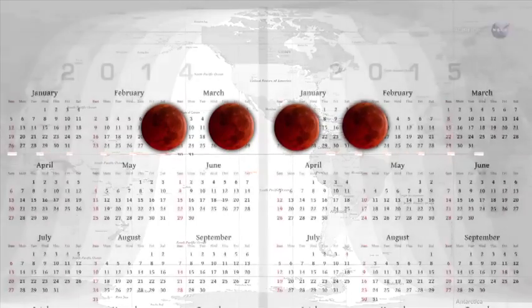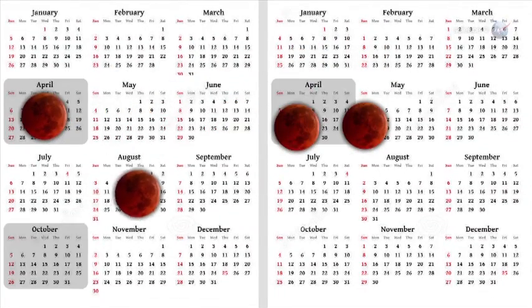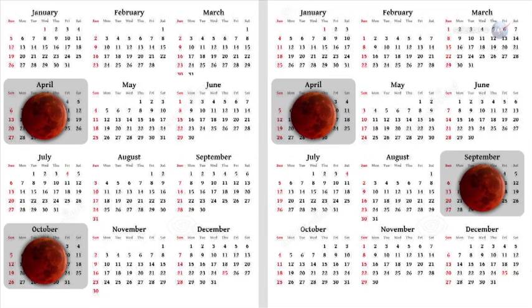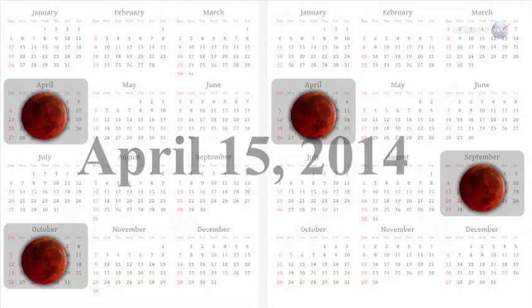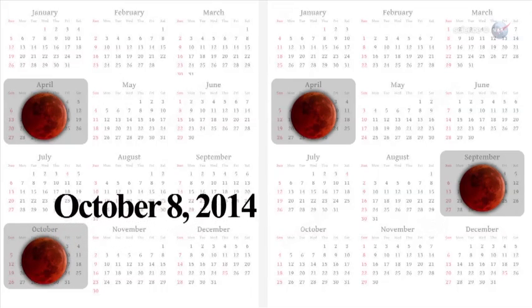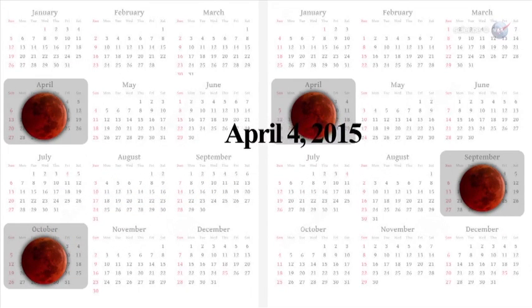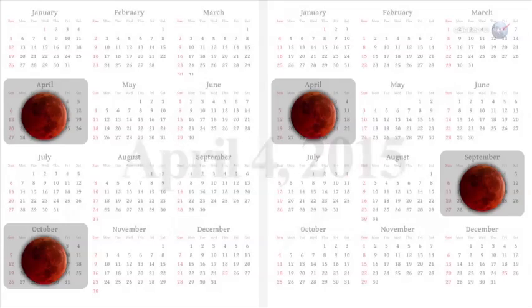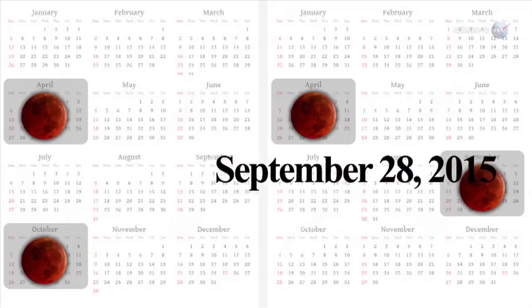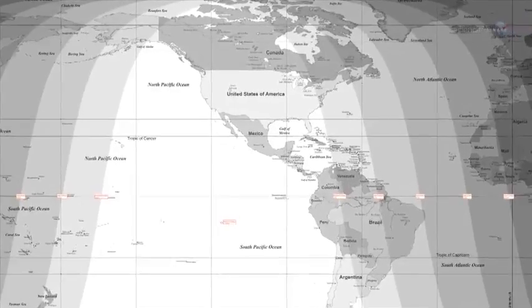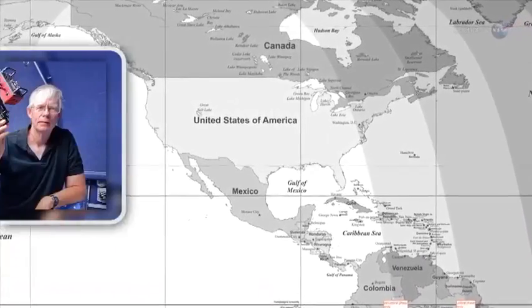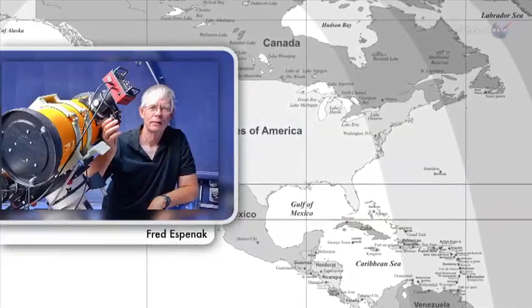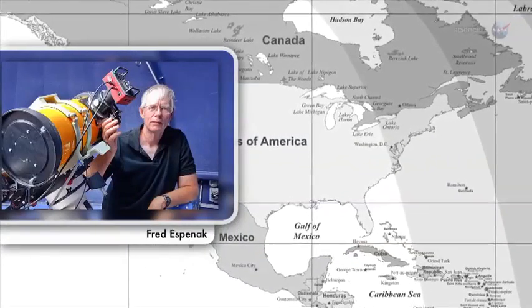A series of four consecutive total eclipses occurring at six-month intervals. The total eclipse of April 15, 2014, will be followed by another on October 8, 2014, and another on April 4, 2015, and another on September 28, 2015. The most unique thing about the 2014–2015 tetrad is that all of them are visible for all or parts of the USA, says longtime NASA eclipse expert Fred Espinak.